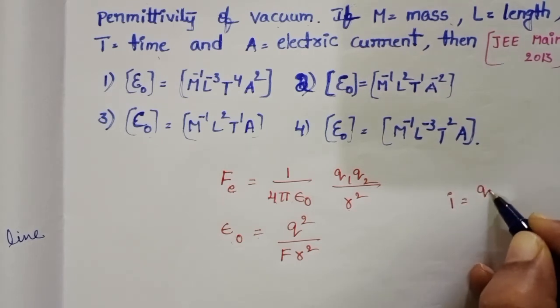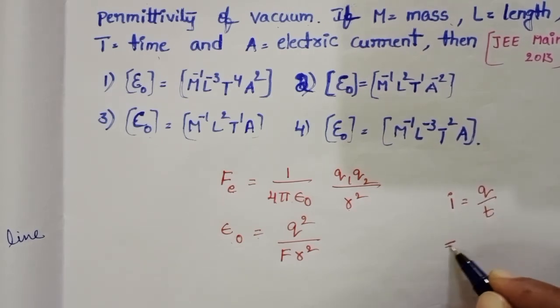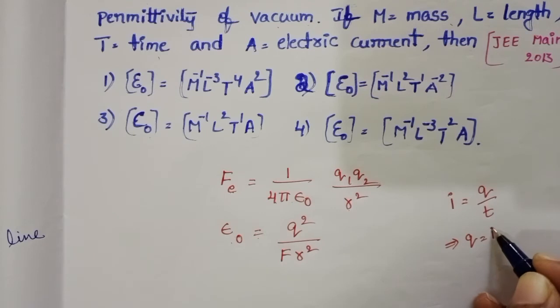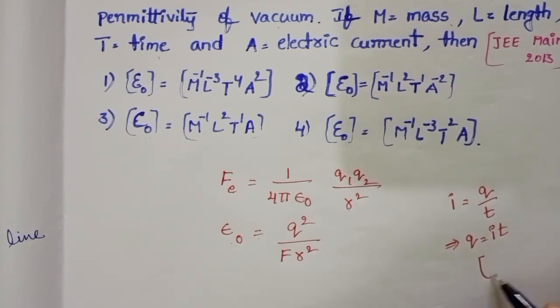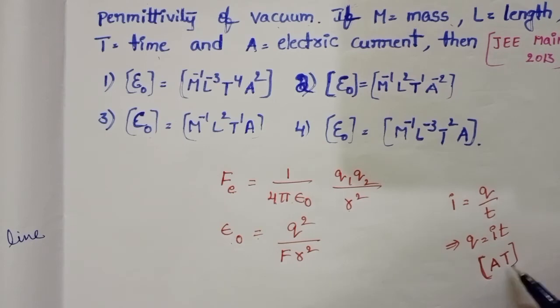Electric current I = Q/T, and from this Q = IT. The dimensional formula of charge is [AT],